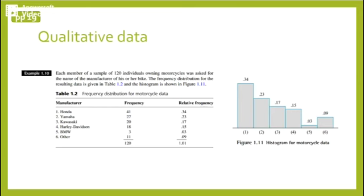On page 19, we also talk about qualitative data. A frequency distribution and a histogram can be constructed when the data is qualitative, so it is categorical. In this case, you can also construct a bar graph which is almost the same as the histogram. Instead, the bars do not touch each other, so there is a little space between each bar.